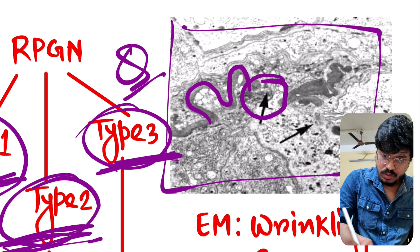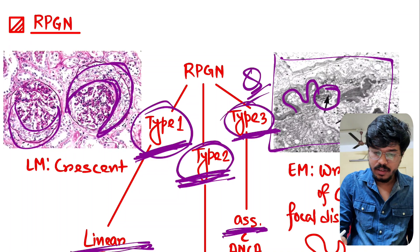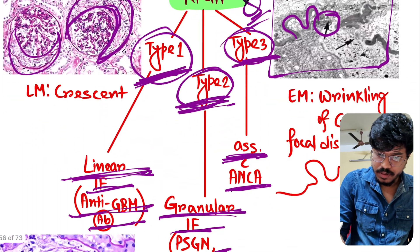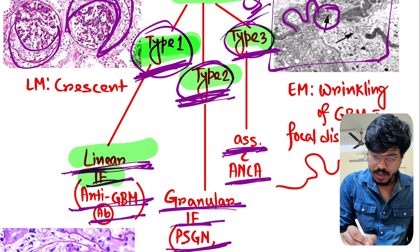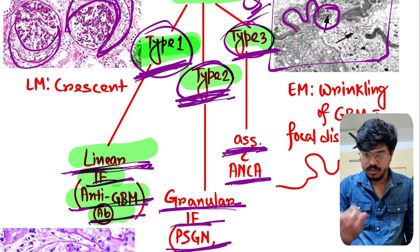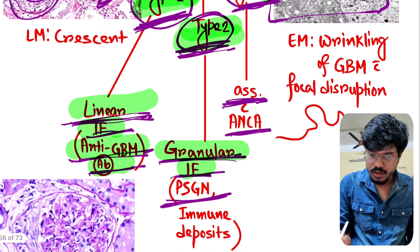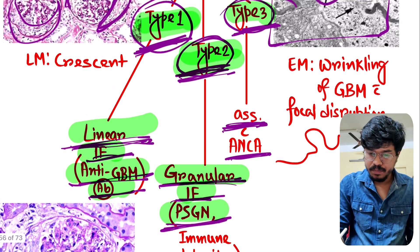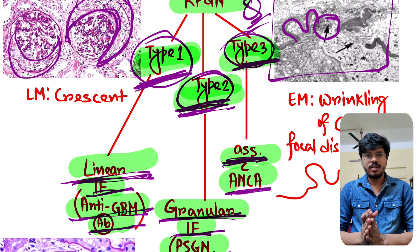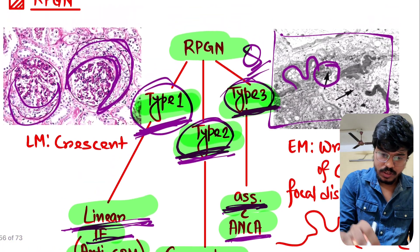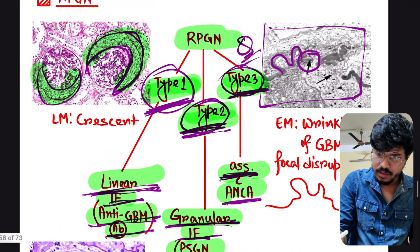Quick revision: RPGN is of three types. Type 1 — linear immunofluorescence, example anti-GBM antibody (Goodpasture syndrome). Type 2 — granular immunofluorescence, example PSGN. Type 3 — associated with ANCA, the pauci-immune type.